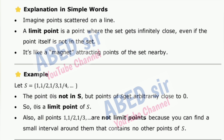It's like a magnet attracting points of the set nearby. Example: Let S = {1, 1/2, 1/3, 1/4, ...}. The point 0 is not in S, but points of S get arbitrarily close to 0. So 0 is a limit point of S. Also, all points 1, 1/2, 1/3 are not limit points because you can find a small interval around them that contains no other points of S.